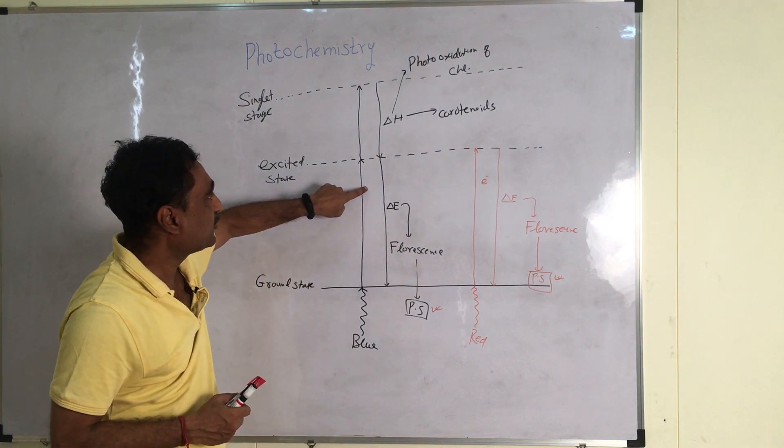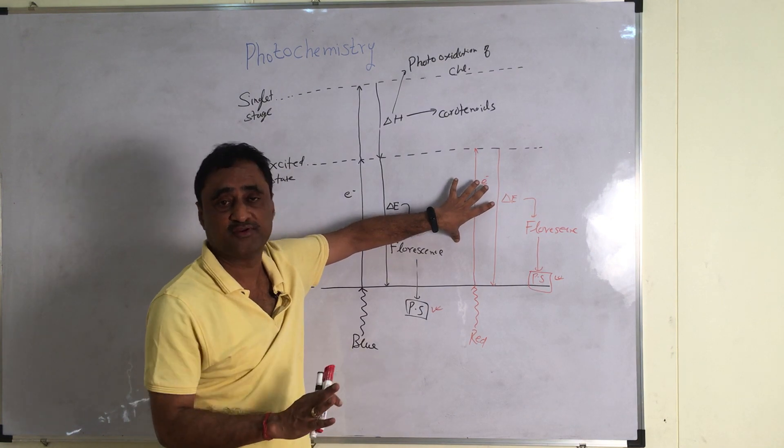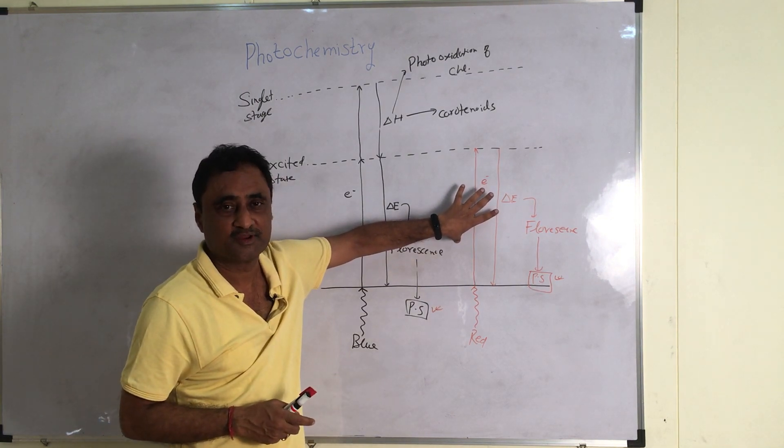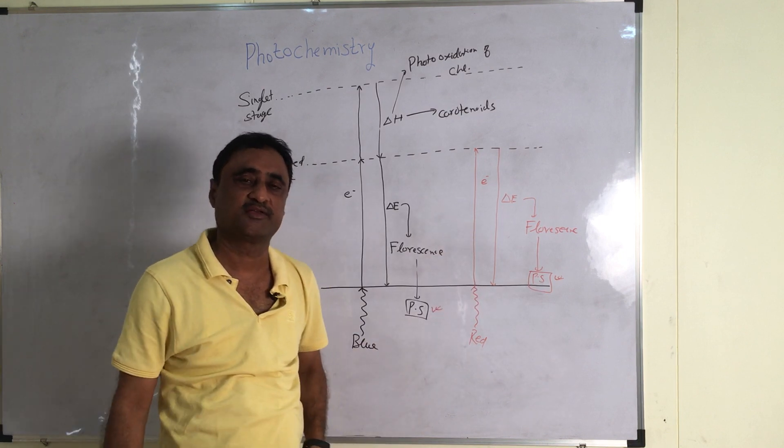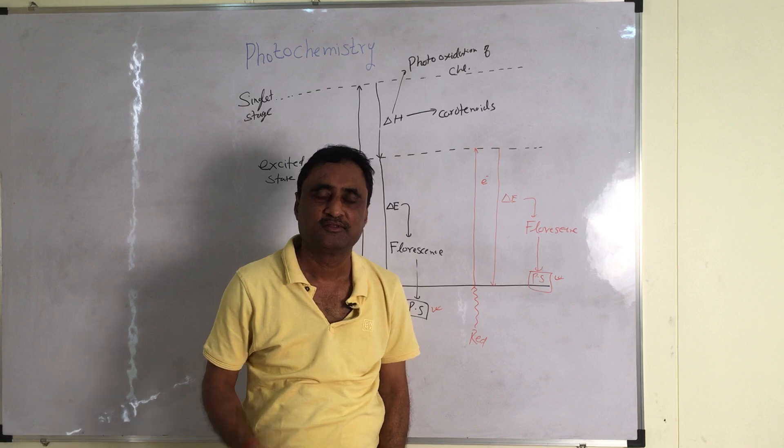So in case of blue light, there is a loss of energy in the form of heat, but in case of red light, there is no loss of energy. That is why we say red light is the most efficient light. So this is a very simple thing as far as the entire photochemistry is concerned. Thank you.